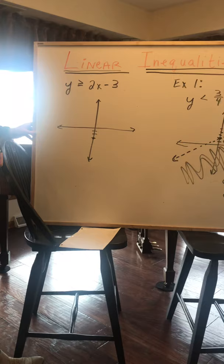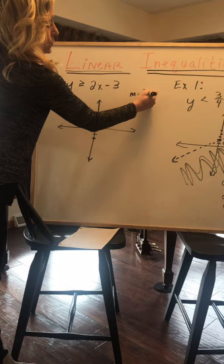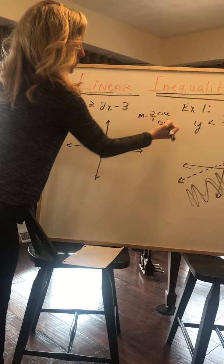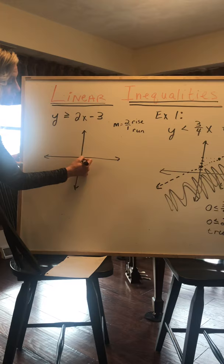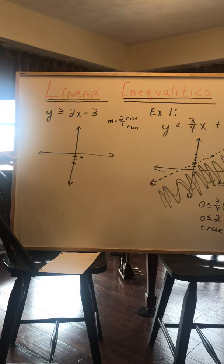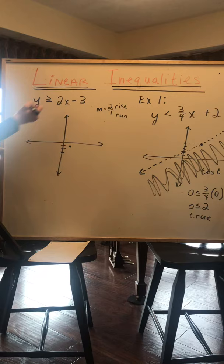And in this case, our slope, our m is 2 over 1. So that means we rise 2, and we run 1 from our point. So we come down here to our point, and we rise 2 and run 1. We plot that point. Now we have to decide if it's going to be a solid line or a dotted line. And since it has that or equals to underneath, it's a solid line.